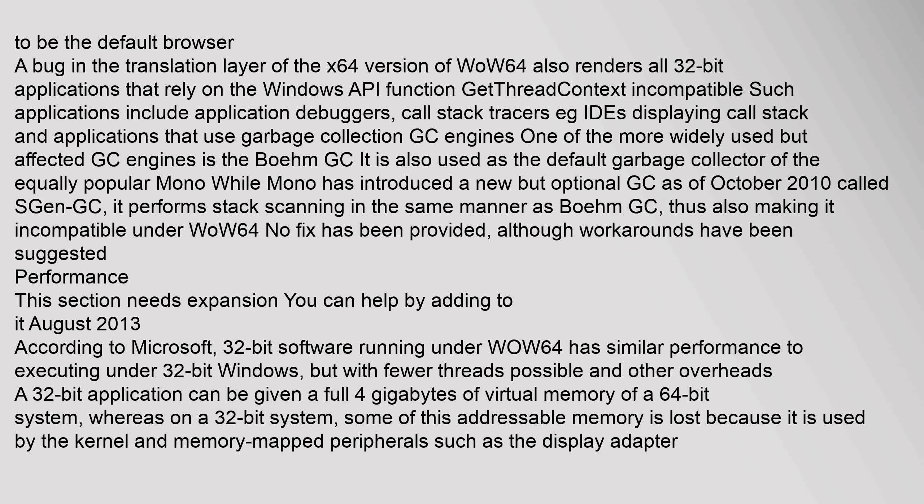One widely affected garbage collection engine is the Boehm GC, also used as the default garbage collector in the popular Mono framework. Mono introduced a new optional GC as of October 2010 called SGen GC, but it performs stack scanning in the same manner as Boehm GC, making it also incompatible under WOW64. No fix has been provided, although workarounds have been suggested. According to Microsoft, 32-bit software running under WOW64 has similar performance to executing under 32-bit Windows, but with fewer threads possible and other overheads.